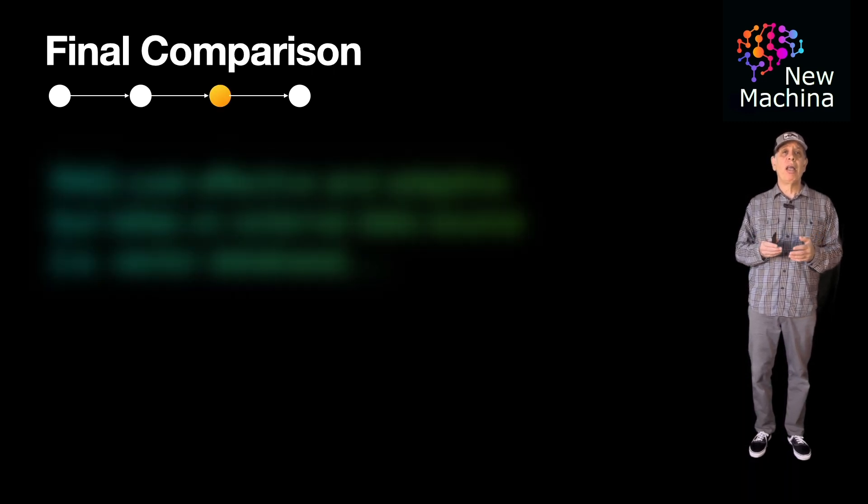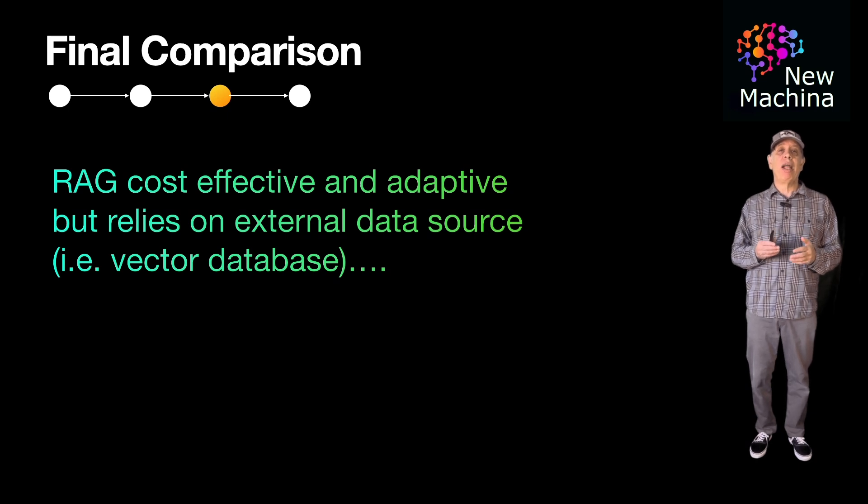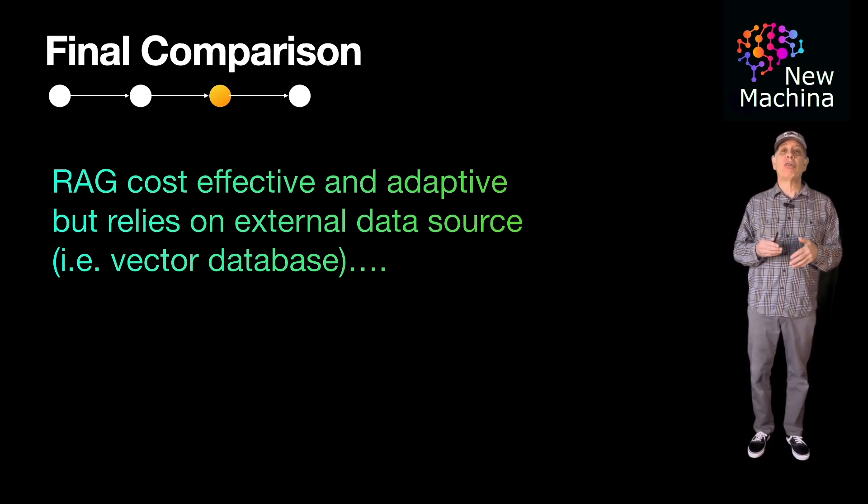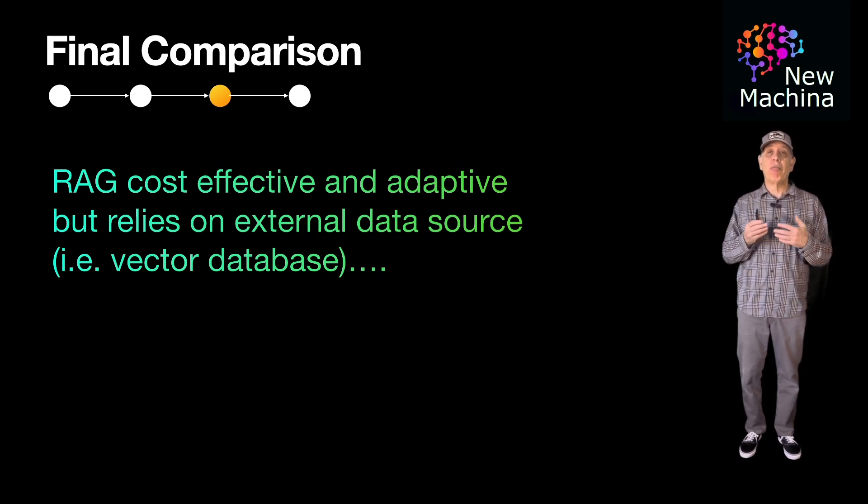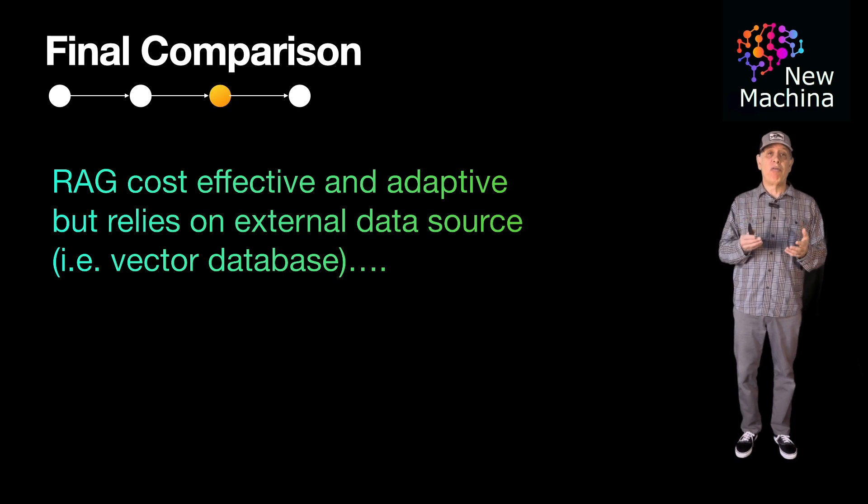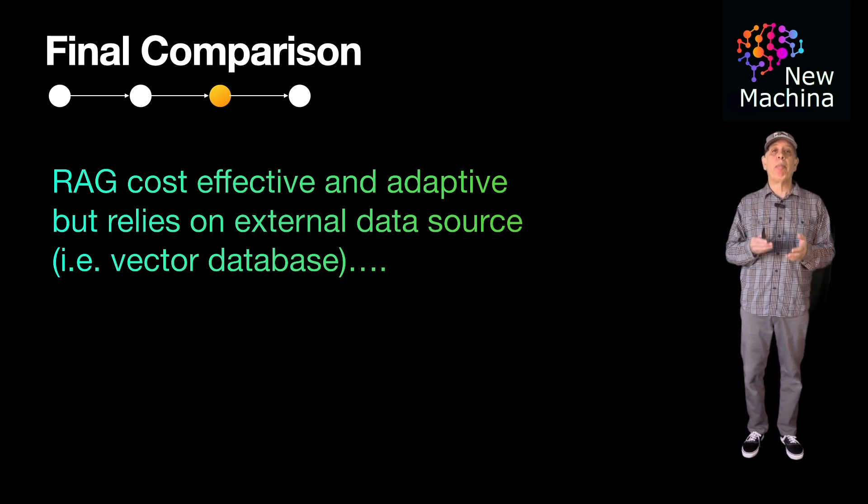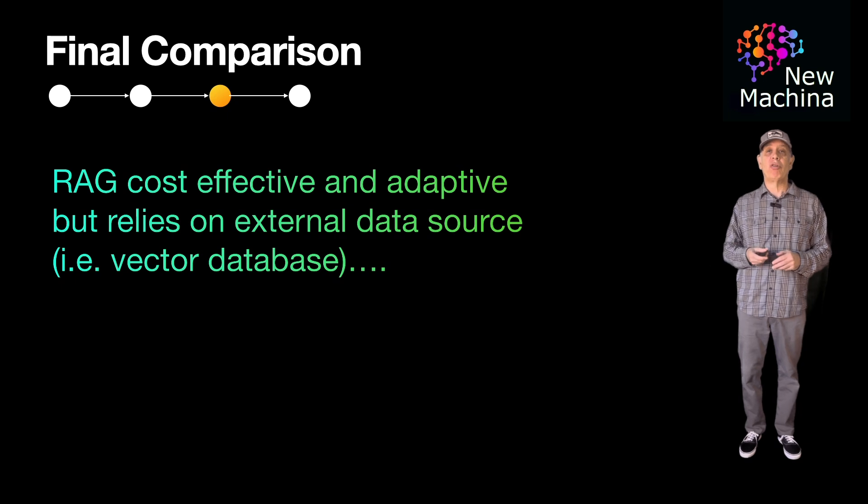So, in summary, RAG dynamically integrates an LLM with an external data source, normally a vector database, enabling real-time retrieval of up-to-date information, making it cost-effective and adaptable, but reliant on an external data source.